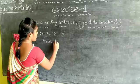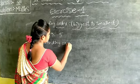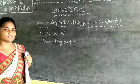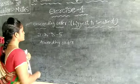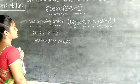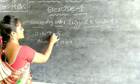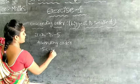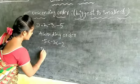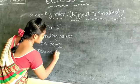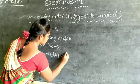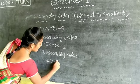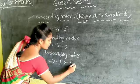See ascending order. Descending order — biggest to smallest. The biggest number among minus 2, minus 3, minus 5 is minus 2, then minus 3, then minus 5.